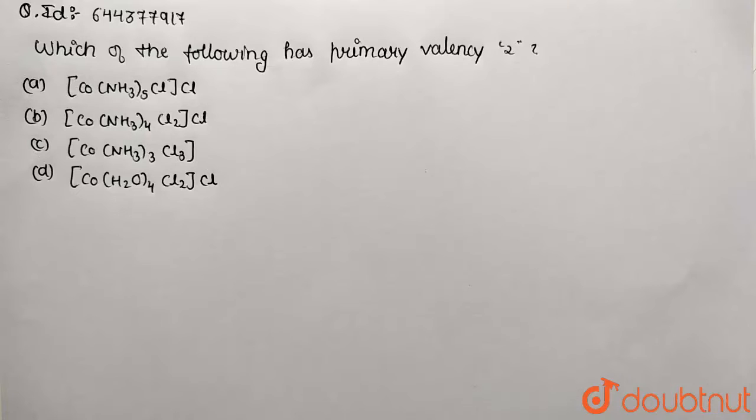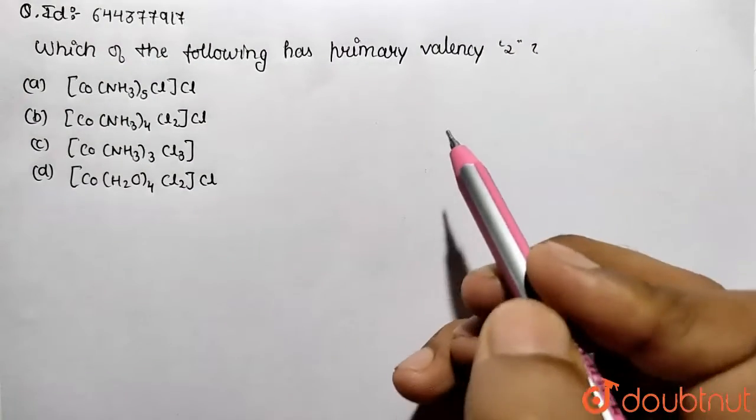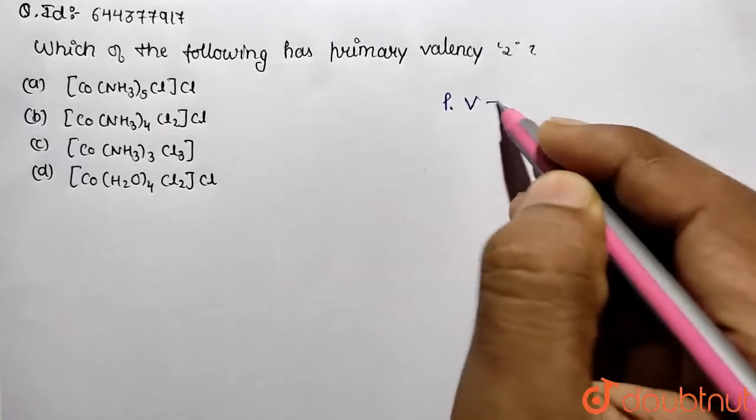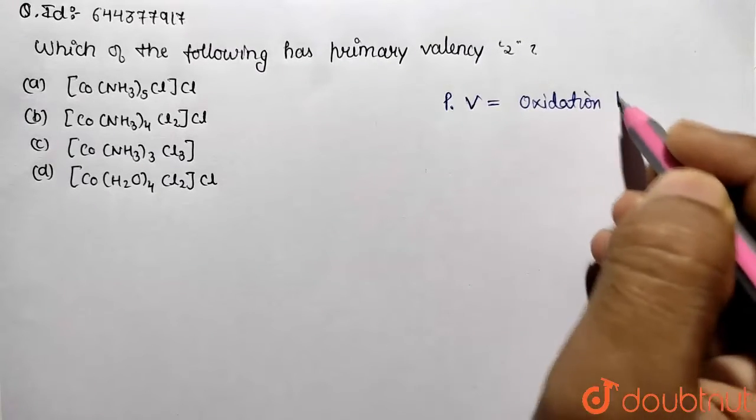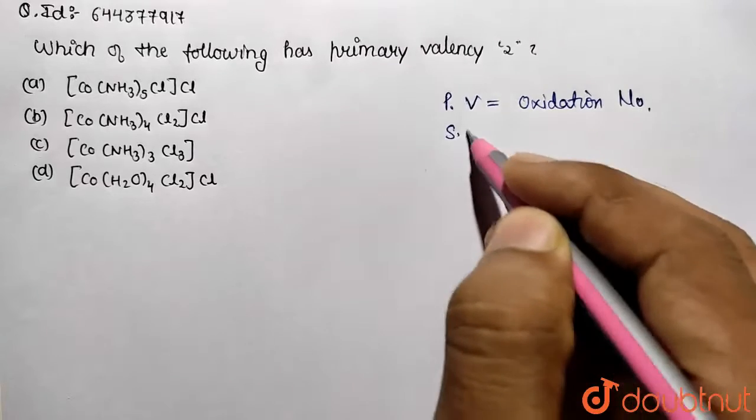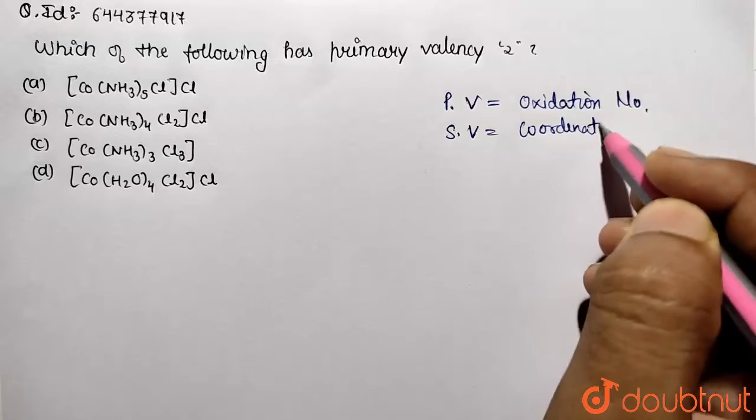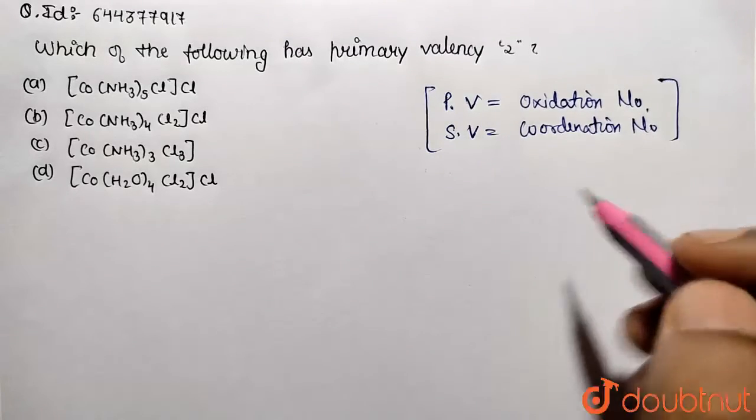Hello students, in this given question we need to work on which of the following has the primary valency of 2. So basically, I want to tell you that primary valency is going to be called as the oxidation number, and for your reference secondary valency is called as the coordination number. So this you need to know to answer this type of question.